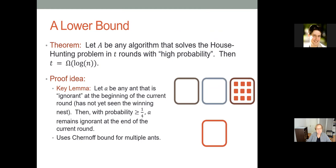We get a lower bound theorem: if any algorithm solves the house hunting problem in T rounds with high probability, then T must be at least order log N. The proof depends on a key lemma: for any ant that hasn't yet visited the winning nest — that is, an ignorant ant — at the beginning of a round, with probability at least a quarter, it remains ignorant by the end of the round.